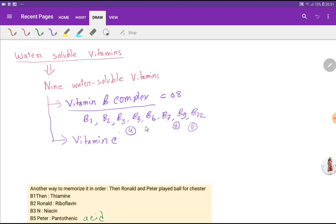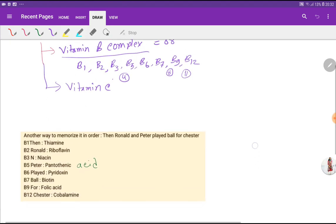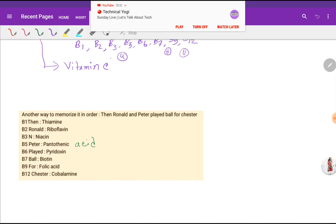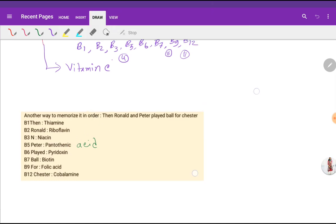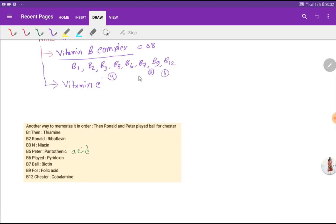So these are the nine vitamins which are soluble in water. But let me show you one trick that will help you remember these eight B vitamins' alternative names.